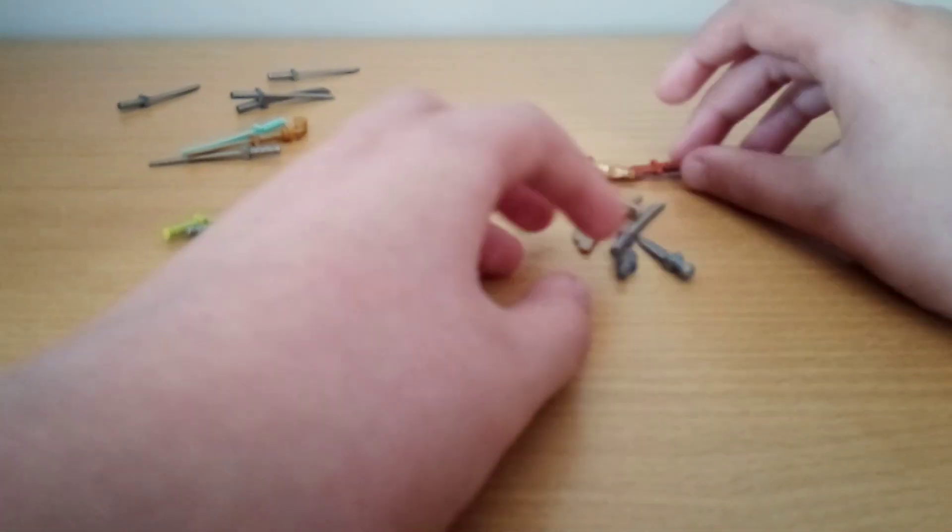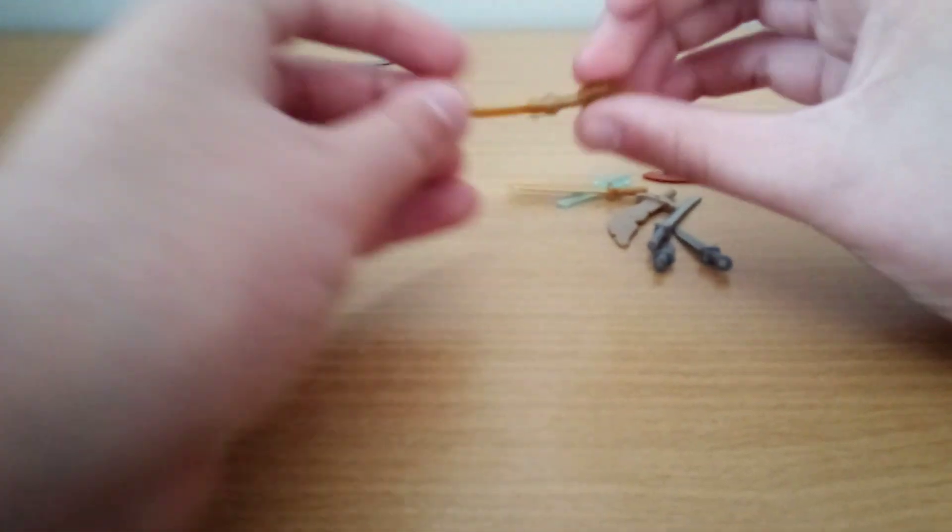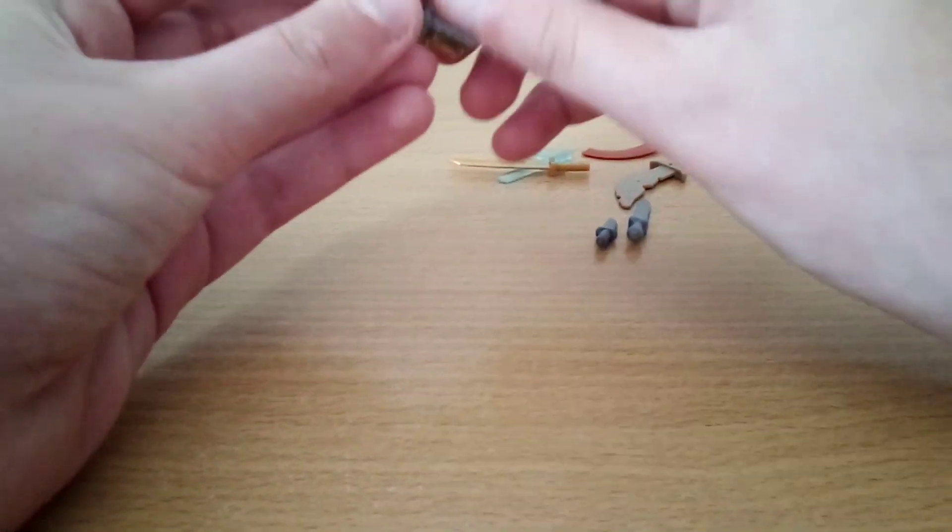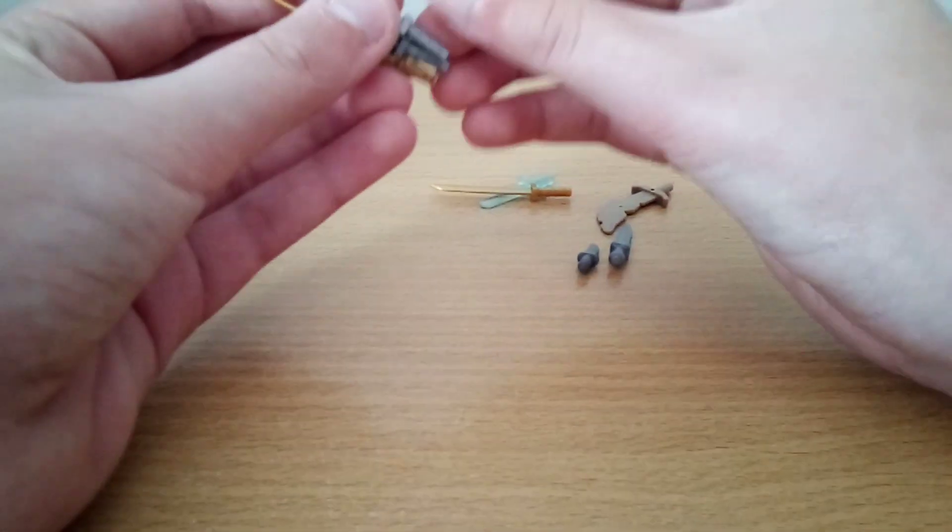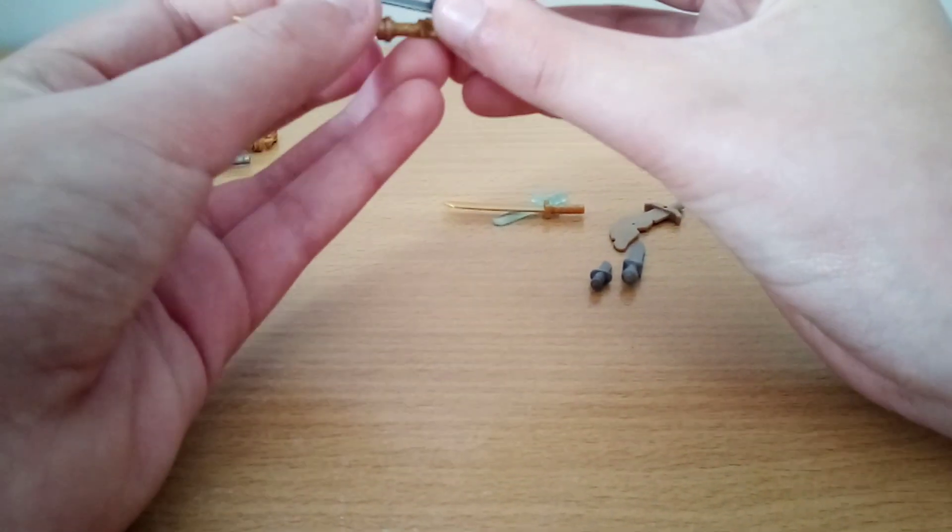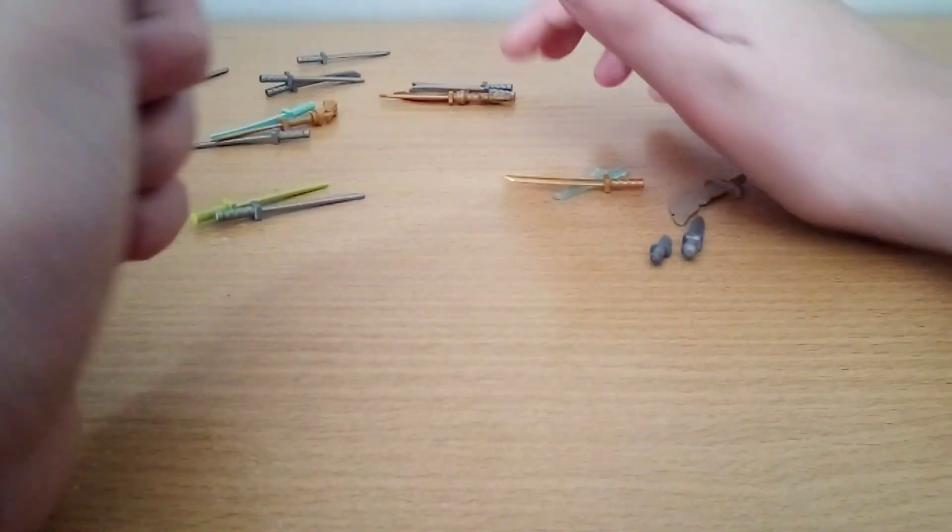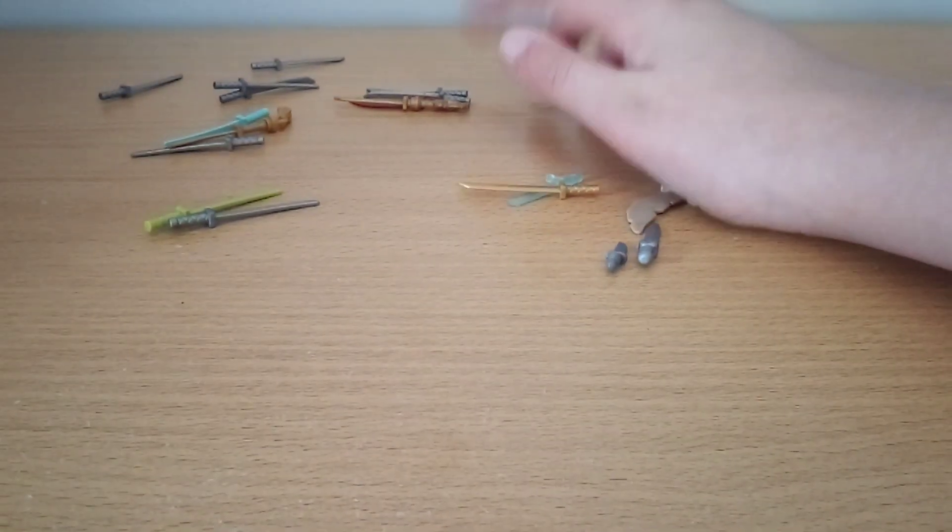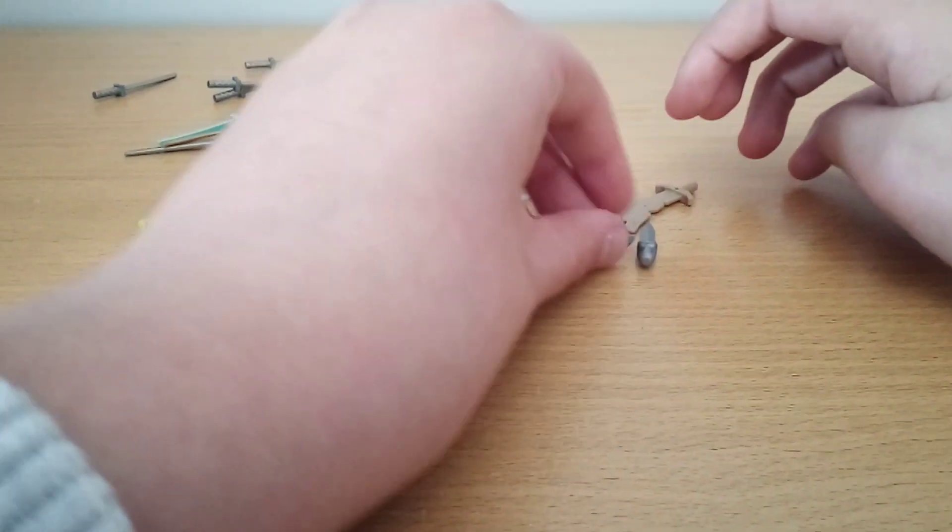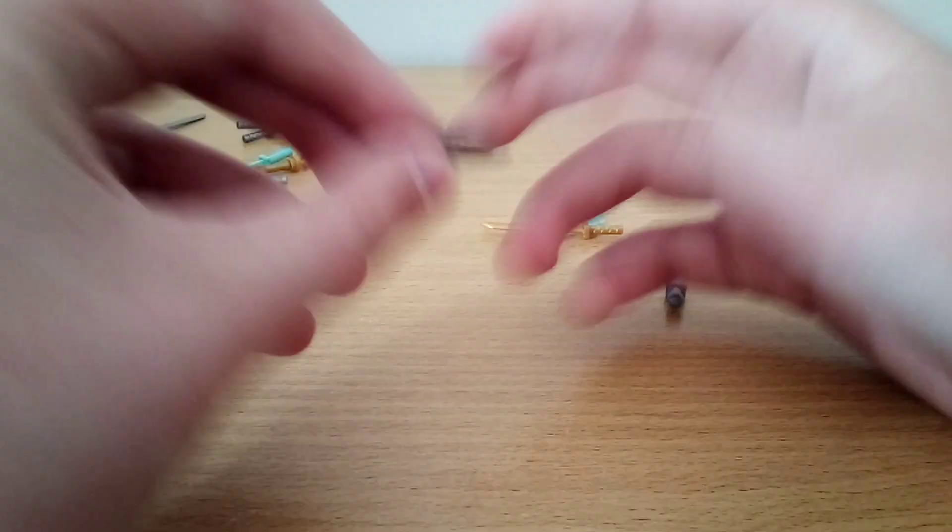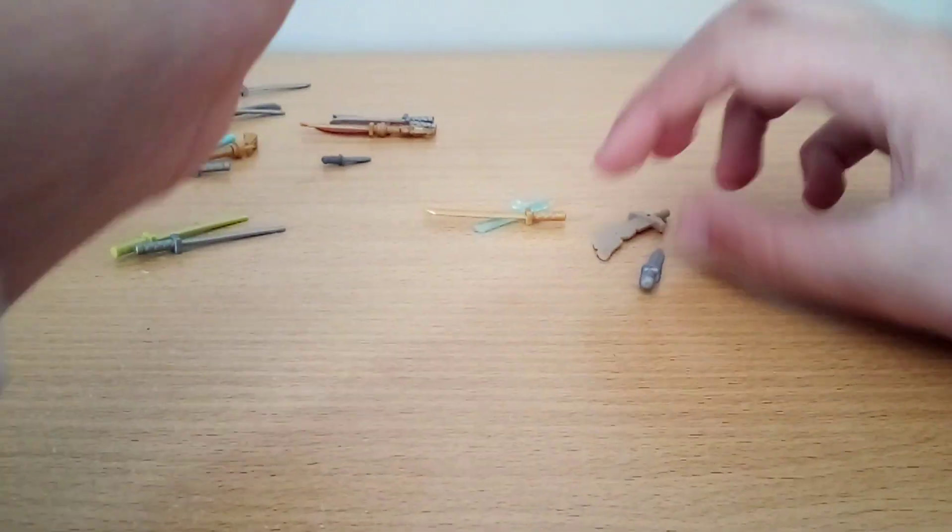That polybag, the new one. This is from, these three are from the Cole's Dirt Bike set from Ninjago. That's a $35 set. This knife here is from the $35 Rise of Voldemort, but it comes in a lot of places.